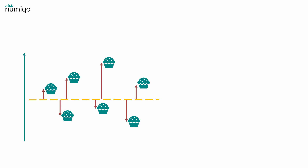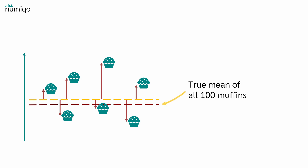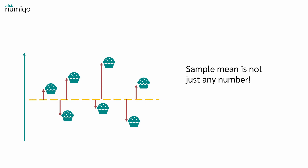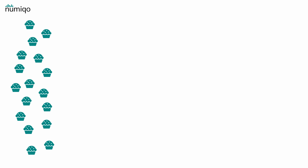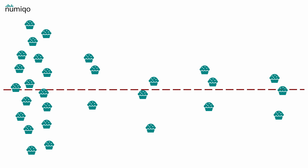What if we have the true mean of all 100 muffins? Let's say the true mean is there. If we calculate the standard deviation using this true mean, the result will be a bit larger than if we use the sample mean. Why? Because the sample mean is not just any number — it's the value that minimizes the distances within the sample. From this population, we take four samples of three muffins each and calculate each sample mean. If we calculate the standard deviation of these samples using the sample mean, in all four cases the results would be smaller than if we use the population mean.